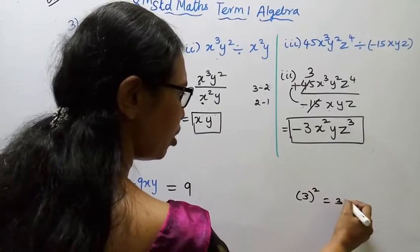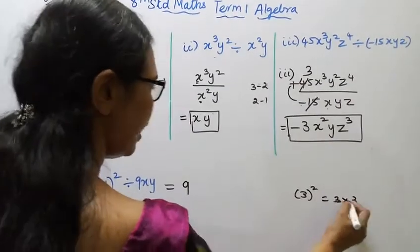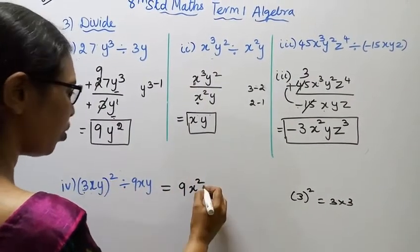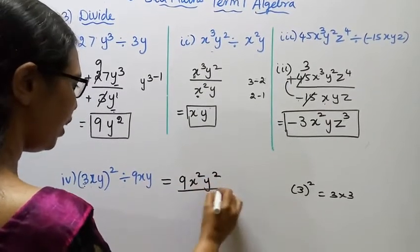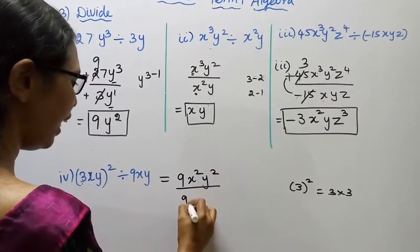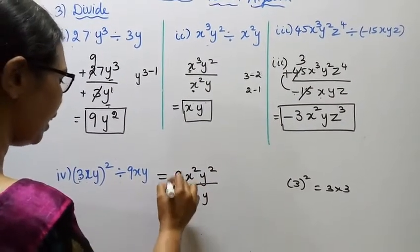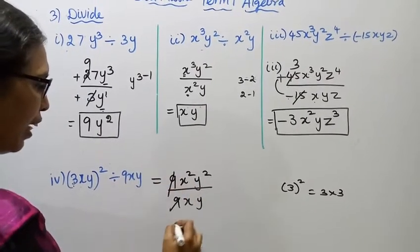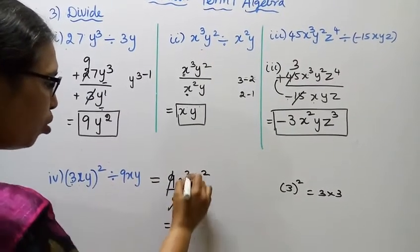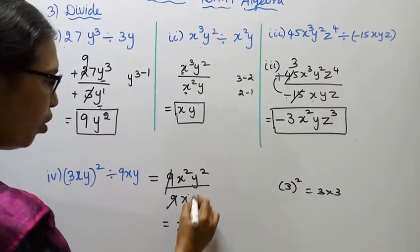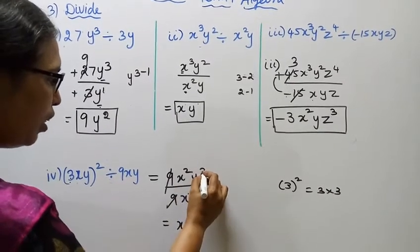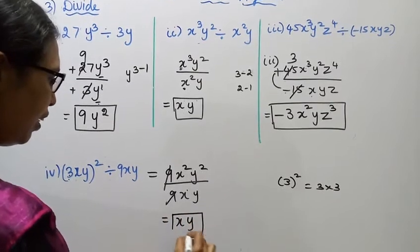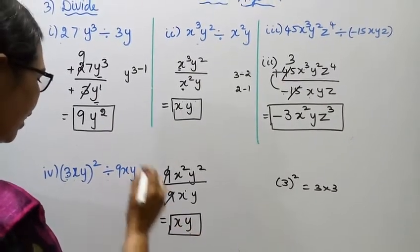Cancel: 2 minus 1 is 1, Y power 2 minus 1 is 1. This is the answer: xy.